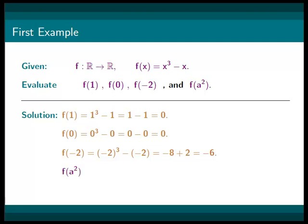For f at a squared, we will get a squared to the power of 3 minus a squared, which will just be a to the power of 6 minus a squared.